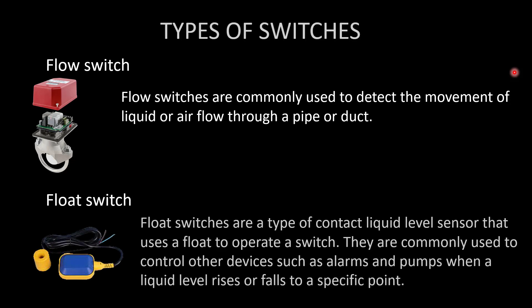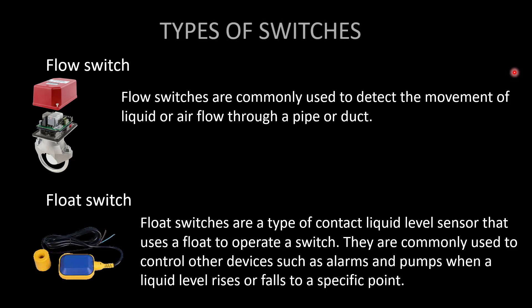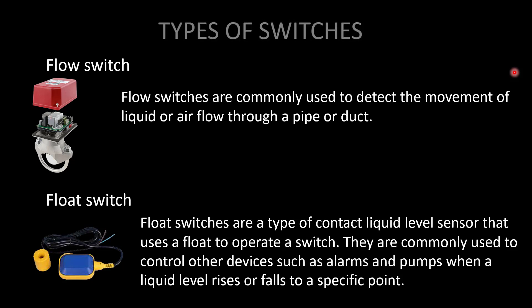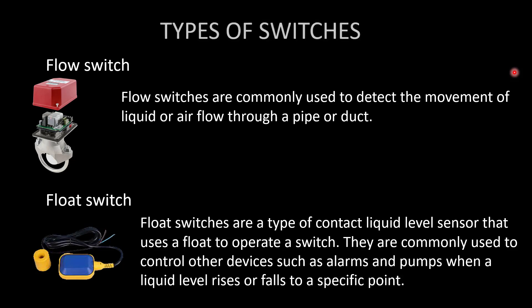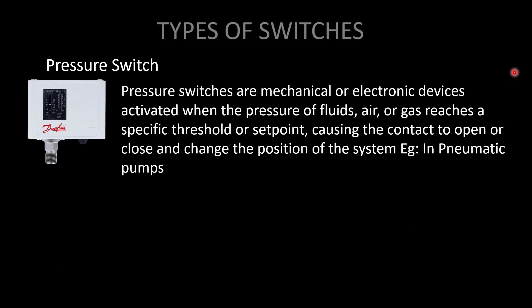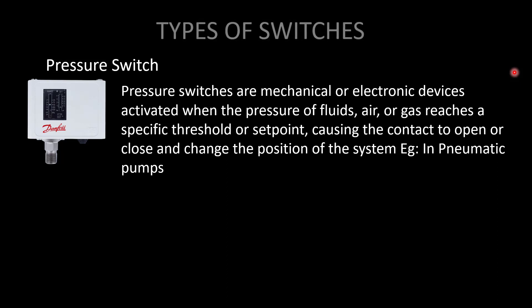A float switch is a contact liquid level sensor that uses a float to operate a switch. It is commonly used to control devices such as alarms and pumps when a liquid level rises or falls to a specific point. When the float is horizontal above the water it is active; as water level drops, it tilts to vertical, triggering the switch and turning the pump off. A pressure switch is activated when the pressure of a fluid, air, or gas reaches a specific threshold — widely used in hydropneumatic water supply systems.